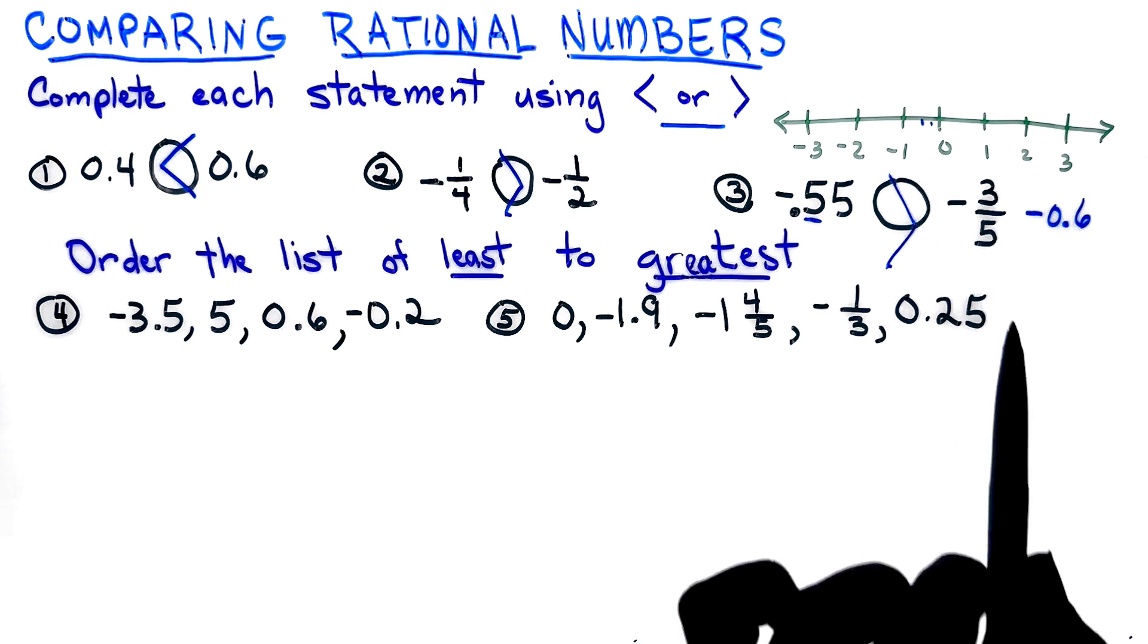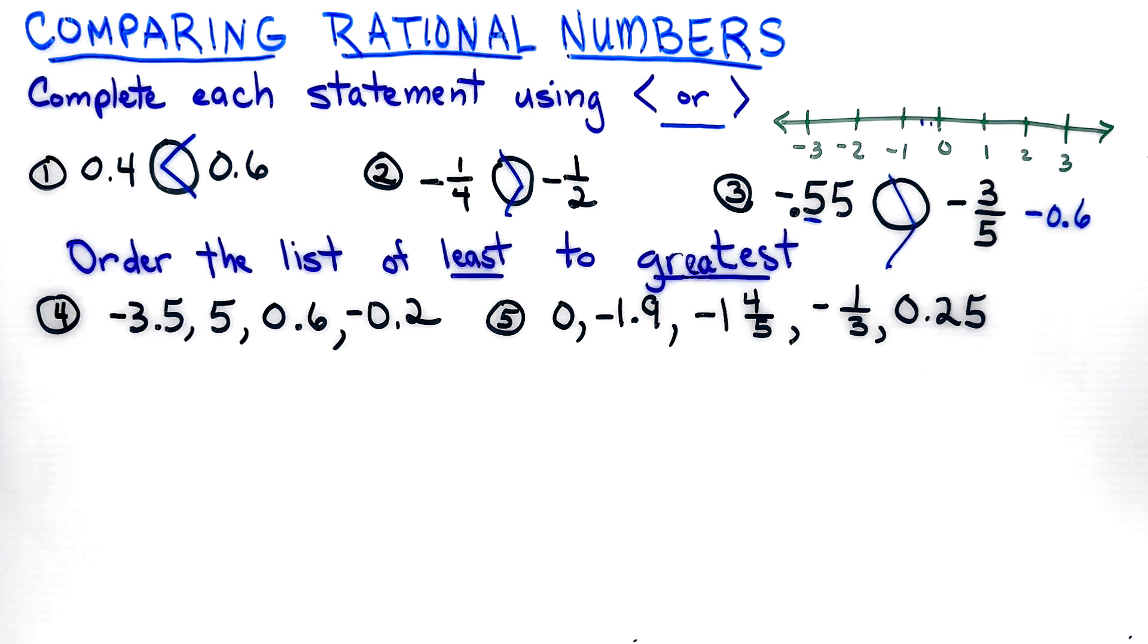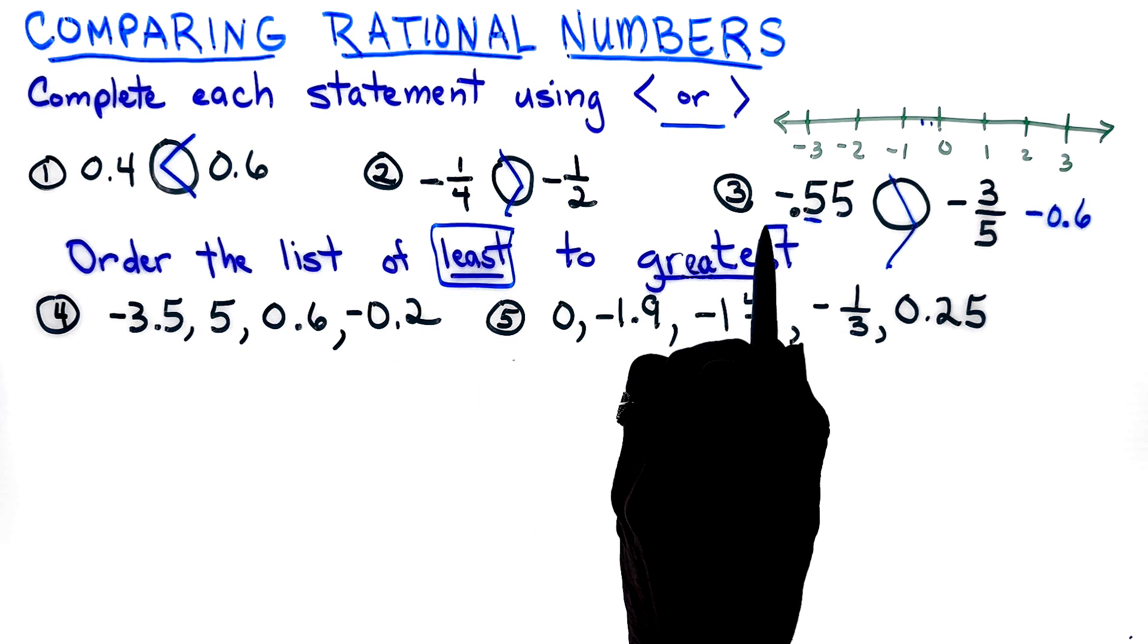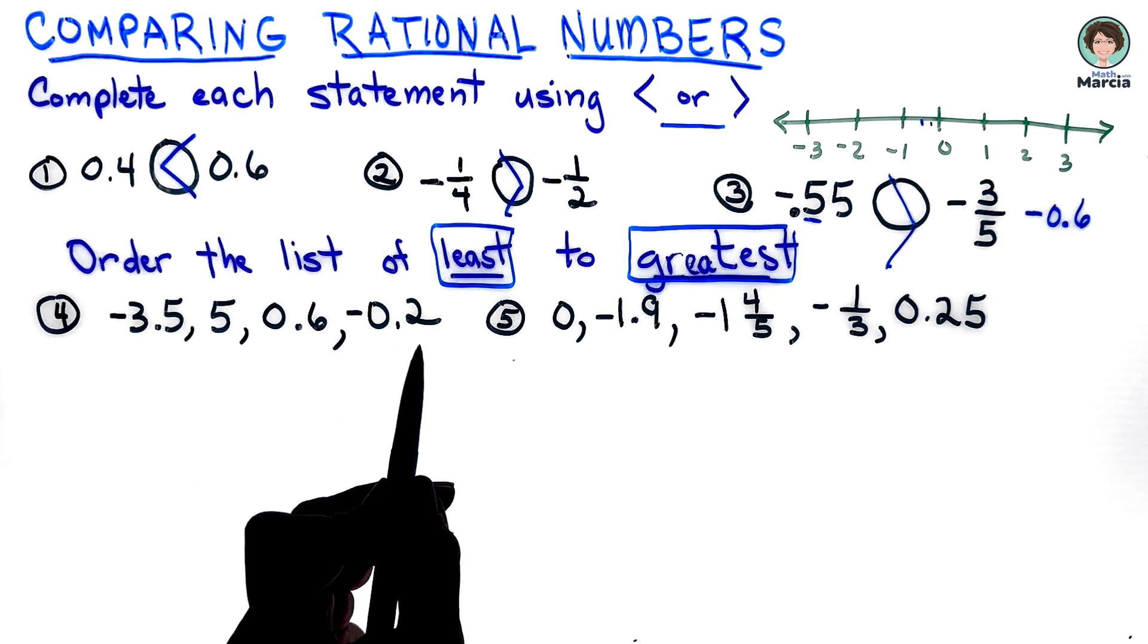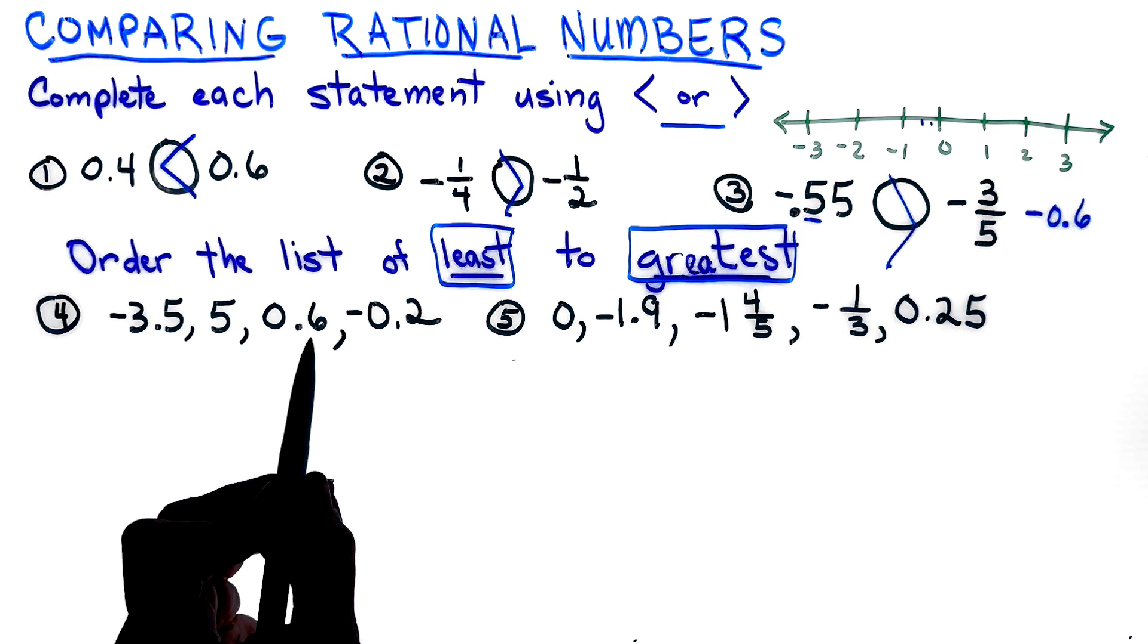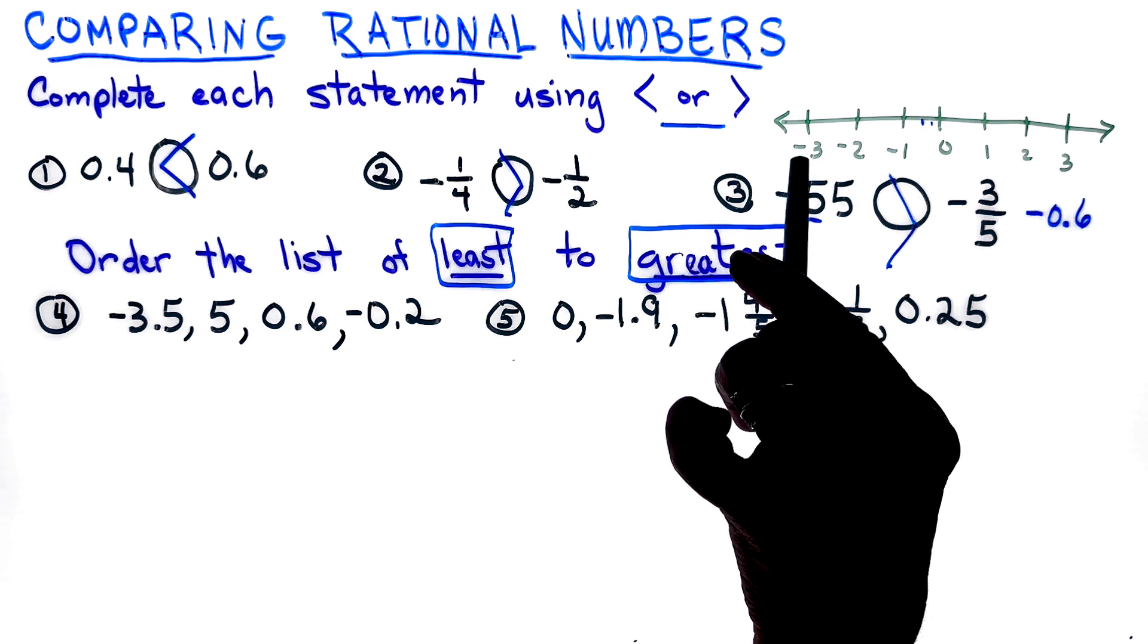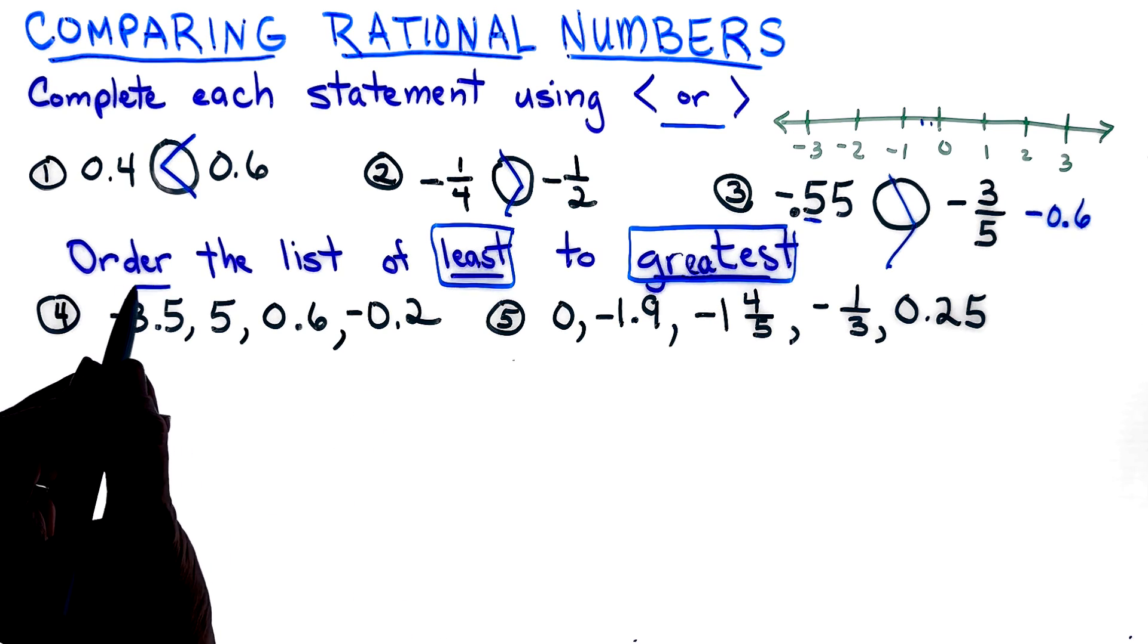Looking at the next problems, we're going to order these from least, and I always like to mark my text, to greatest to make sure that I follow those directions. As I'm working this problem, I'm going to look at all of them. They're all decimals. I see I have some negatives and I have some positives. When I'm looking at them, I know that my negatives are less than any positive, so I am going to just be looking at my negatives right now.